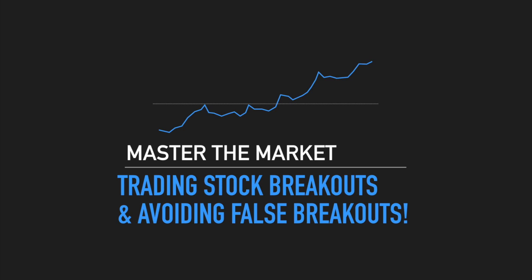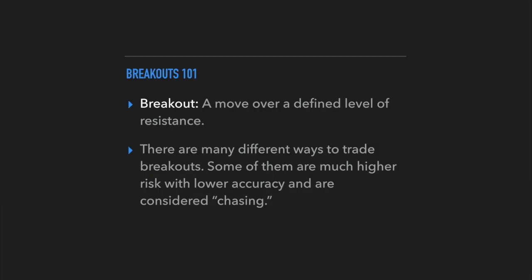First and foremost, what is a breakout? A breakout is going to be a move over a defined level of resistance. Resistance levels are an area where the price seems to peak at multiple times and then come back down, and once that area of resistance is formed, a breakout is going to be when the stock is able to break above and move forward from that resistance level.